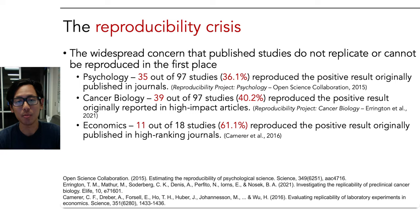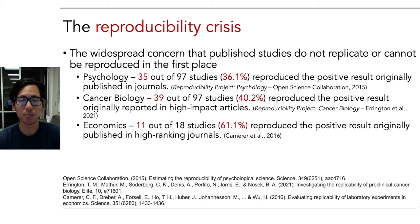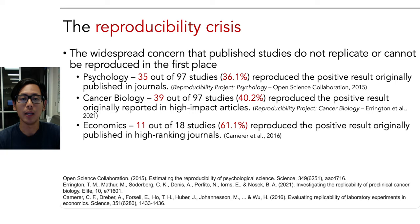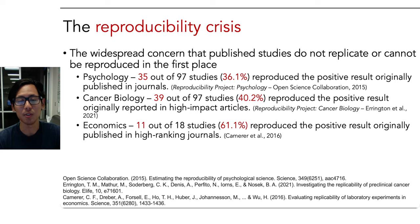I've picked out three examples. In the Reproducibility Project in psychology, they tried to replicate 100 published findings. Of those, 97 reported positive effects, and only 35 of the replications reproduced the positive result — approximately 36%. A similar thing happened in cancer biology: they tried to replicate 100 studies, 97 with positive results, and only 39 reproduced the original result. In economics, 11 out of 18 studies reproduced the positive result. Overall, less than 50% of published results are being replicated.